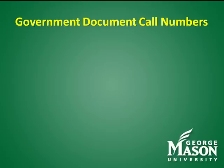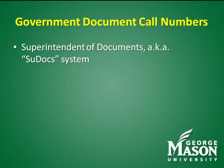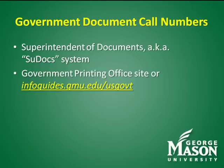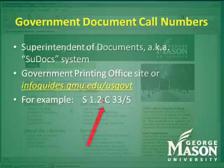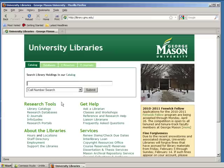Government documents have their own special system of call numbers, known as the Superintendent of Documents, or SUDOCS system. The SUDOCS system is the 90-year-old classification system the U.S. Government uses to identify and catalog government publications. You can visit the Government Printing Office website for more information, or visit the Mason Library Government Documents Info Guide at infoguides.gmu.edu/usgovt. An example of a SUDOCS number is seen here. Remember, the difference between a SUDOCS number and a regular Library of Congress call number is the colon in the middle. To do a call number search, select that item from the drop-down menu and plug in the call number — in this case, S 1.2:C 33/5. Hitting SUBMIT will take you right to the item assigned that call number.